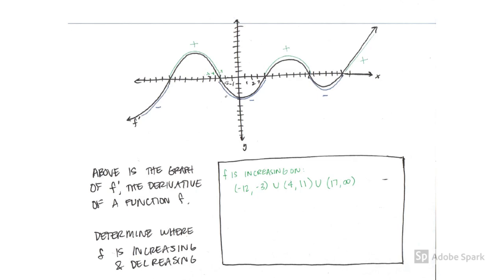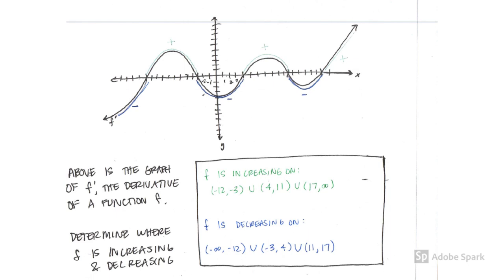Once I do the preliminary step of indicating where the derivative is positive and negative, I can write down where the function is increasing. The function is increasing from negative 12 to negative 3, again from 4 to 11, and then from 17 to infinity — using interval notation. And since I've already indicated where the derivative is negative, I can write down where the function is decreasing: from negative infinity to negative 12, again from negative 3 to 4, and then from 11 to 17.